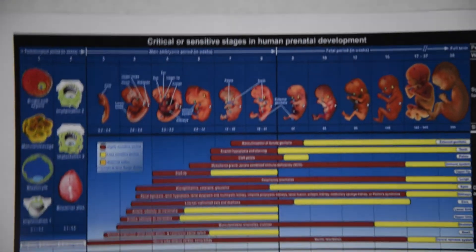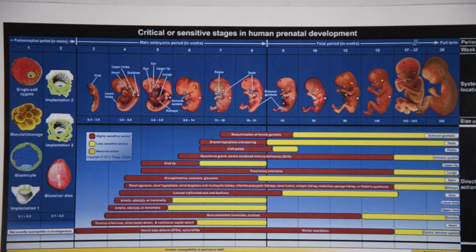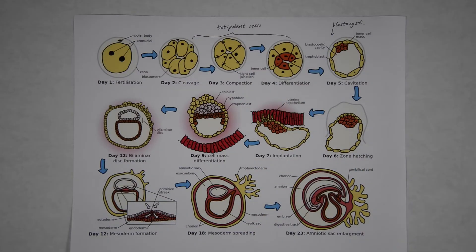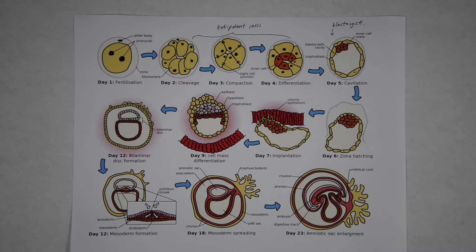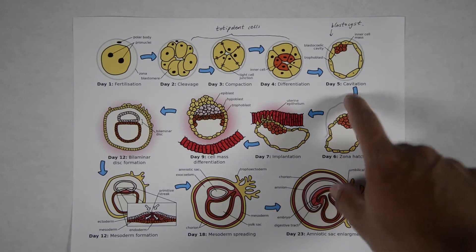This image portrays this development by weeks. If we crop down the first three weeks of the development, we'll get this image. In the first three weeks, the most important day for the acquisition of human embryonic stem cells will be day number five, which is cavitation, labeled here.